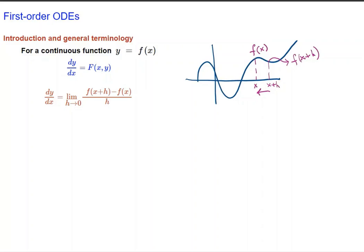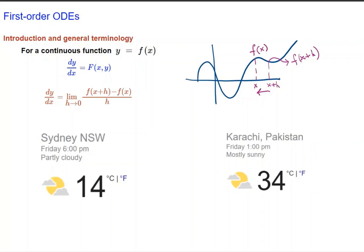An example can be the change of temperatures in two different countries, Australia and Pakistan. In Sydney the temperature on a Friday at 6 p.m. was 14 degrees centigrade, while at the same time in Karachi the temperature was 34 degrees — a big change — depending on the geography, the location where we are measuring the temperature. In this case our geography is the variable x and temperature is the variable y, and dy/dx = F(x,y) describes how temperature changes when geography changes.